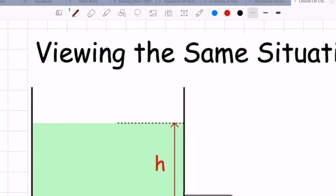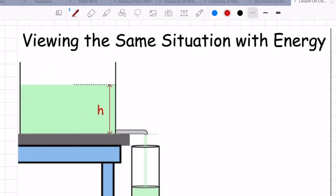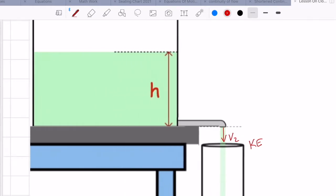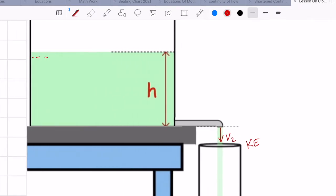What I'd like to do now is view that same situation, but this time in terms of energy. So as the fluid comes rushing out of the faucet, it carries with it kinetic energy. That kinetic energy should be equal to the loss of potential energy as the fluid level drops.